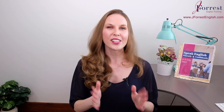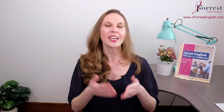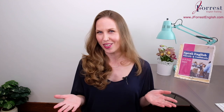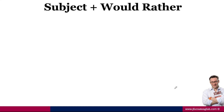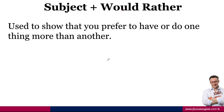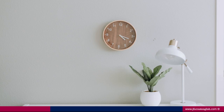In this video, you're going to learn how to use 'would rather.' Let's jump onto my computer and I'll explain exactly how to use this. The structure is: subject plus 'would rather.' We use this to show that you prefer to have or do one thing more than another. Let's see this in some example sentences.